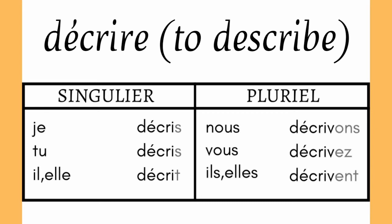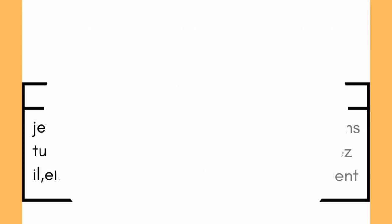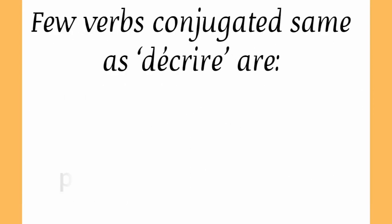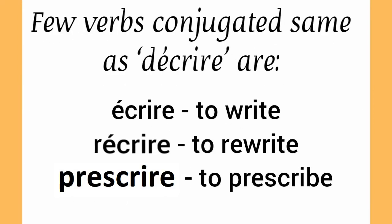The verbs which get conjugated in the same pattern as décrire are: écrire, which means 'to write'; réécrire, which means 'to rewrite'; and prescrire, which means 'to prescribe'.